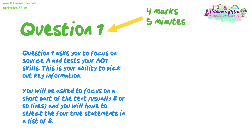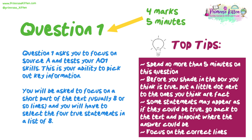Question 1 is worth 4 marks, so we recommend spending about 5 minutes on this question. It asks you to focus on Source A and tests your AO1 skills — your ability to pick out key information. You will be asked to focus on a short part of the text, usually 8 or so lines, and select the 4 true statements from a list of 8. Top tips: spend no more than 5 minutes; put a little dot next to the ones you think are true before shading — this prevents you from having to cross out mistakes. Some statements may appear as if they could be true, so go back to the text and pinpoint where the answer could be. Remember to focus on the correct lines.